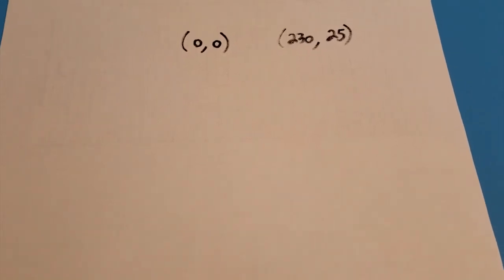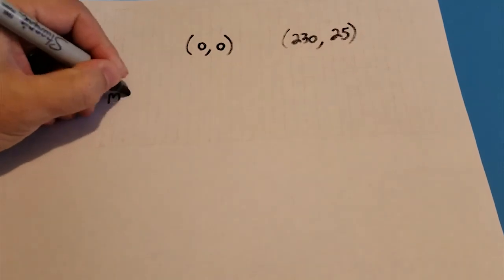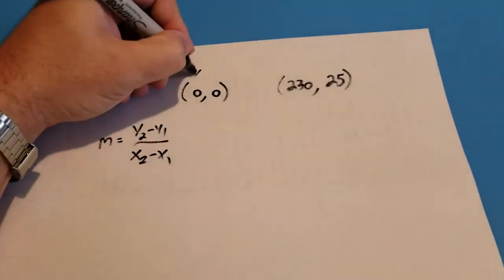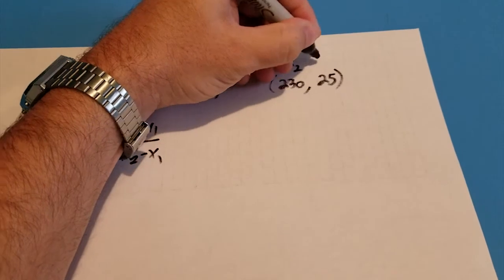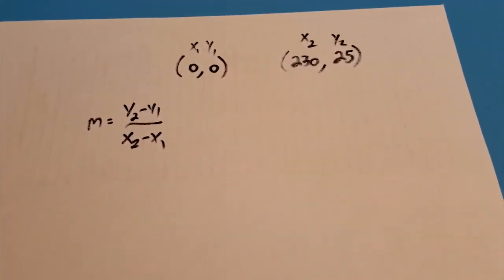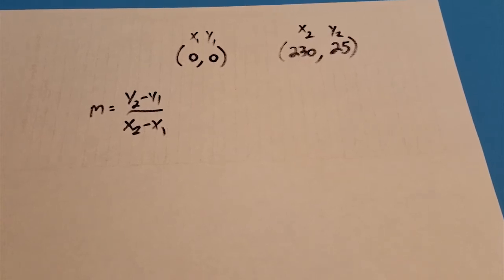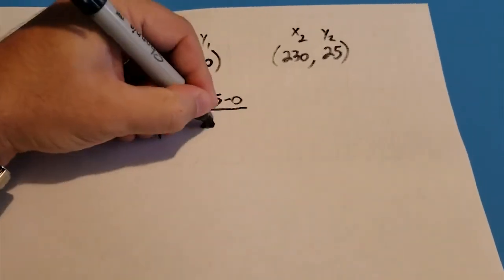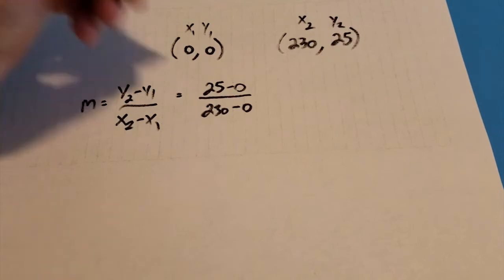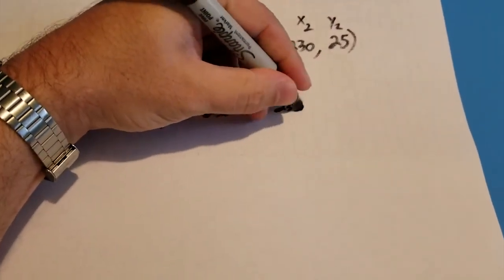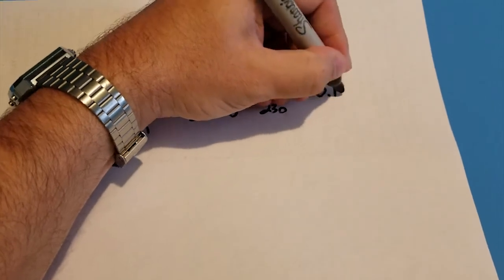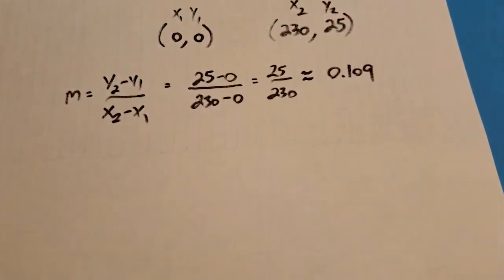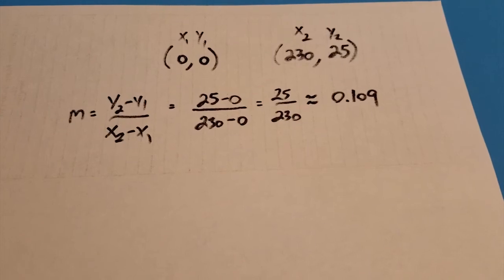Okay. So now that we know this, let's find the slope between these two. So remember, slope is y2 minus y1 over x2 minus x1. We'll call this x1, y1, x2, y2. Like that. Remember all that for math class? That's okay because I'm going to show you anyway. Okay. So our slope then is 25 minus 0 over 230 minus 0, which is really just 25 divided by 230, which came out to 0.109 roughly. Approximately 0.109.